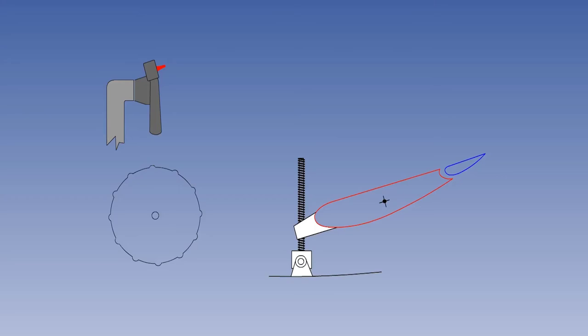Let's now have a look at the advantages of the variable incidence trimming tailplane over the trim tab. The first advantage is that compared to a trim tab, it is much more powerful and has the ability to trim for larger CG and speed ranges.